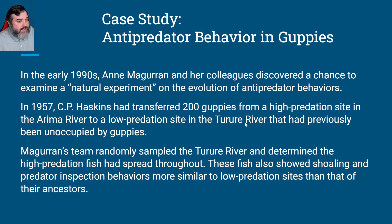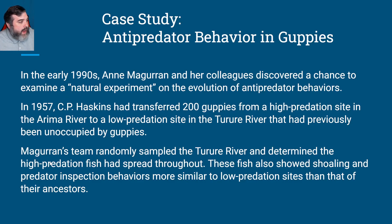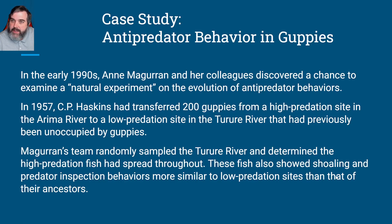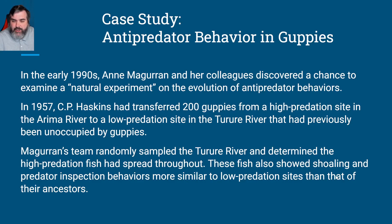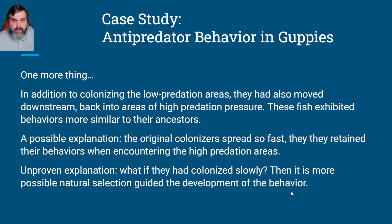McGuran randomly sampled the Turure River almost 40 years later in the 1990s and determined the high predation fish had spread throughout. These fish showed shoaling and predator inspection behaviors more similar to the low predation sites than to their ancestors. So even though they came from the high predation site, they were actually behaving more like the low predation fish — their behavior had changed to match their environment.